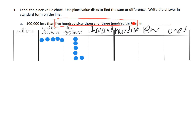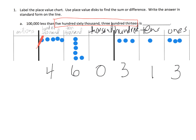Now we have three hundred thirteen, so that's going to be three hundreds, one ten, and three ones. The directions say a hundred thousand less, which means we're going to cross off one of these hundred thousands. We're left with four hundred thousands, six in the ten thousands, nothing in thousands, and three, one, three in hundreds, tens, and ones. The answer in standard form is four hundred sixty thousand three hundred thirteen.